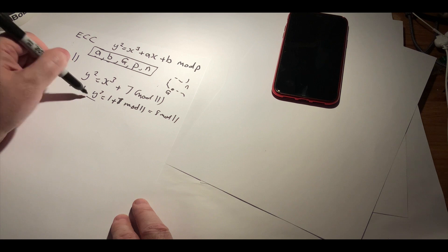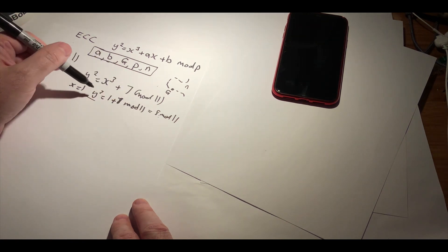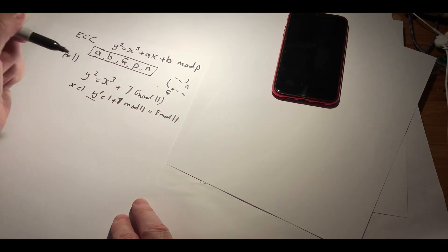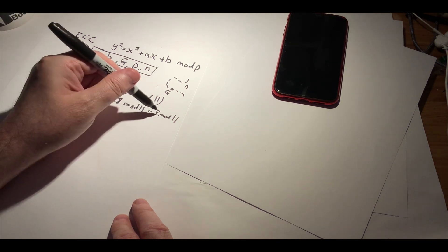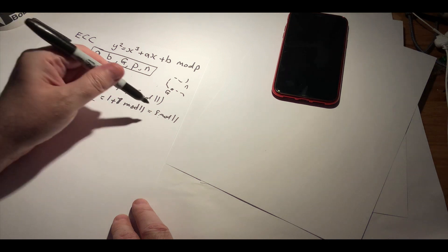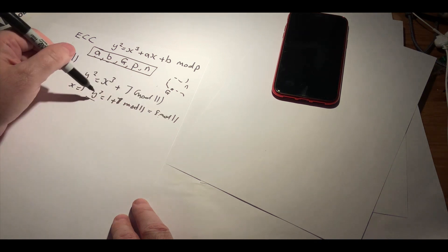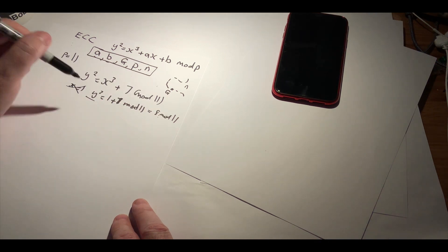And there is no value of y which gives us 8. If we went through all the values of y, we can't find a square root, or what's called the modular square root of 8 to give us this. So there is no point at x equals 1.